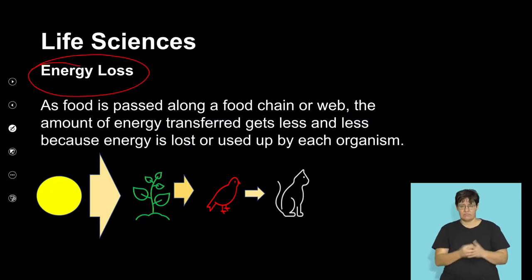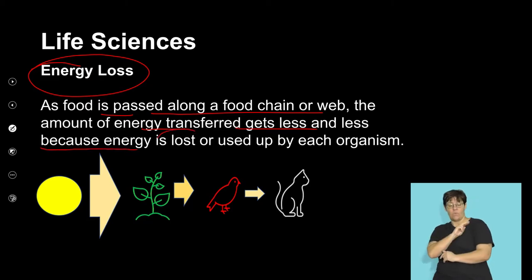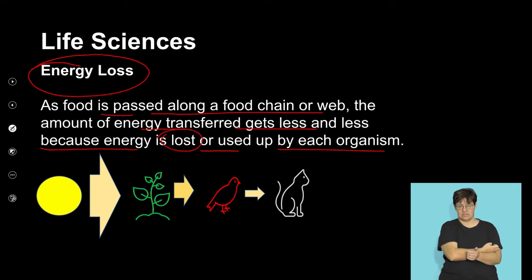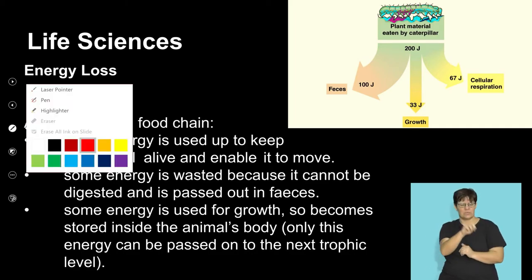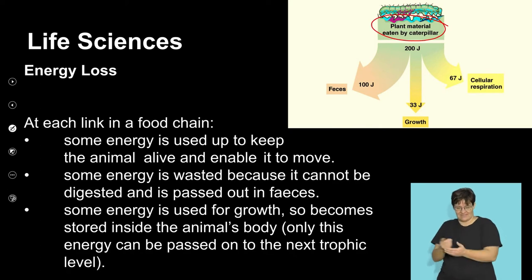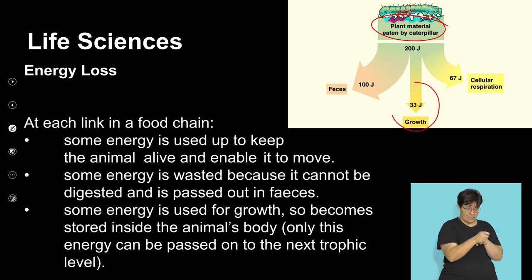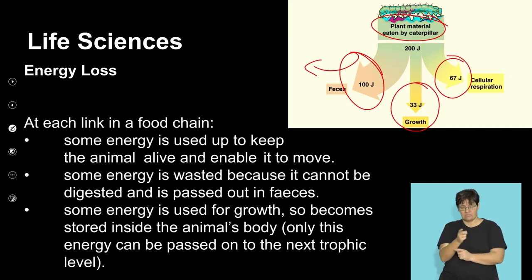As food passes along a food chain or food web, the amount of energy transferred gets less and less because energy is lost or used up by each organism. When a plant is consumed by a caterpillar, a large amount of that energy — measured in joules — is used for growth, some is lost through waste products such as undigested and indigestible products, and some is used for respiration. So there is a very small amount of energy actually available at the next trophic level.